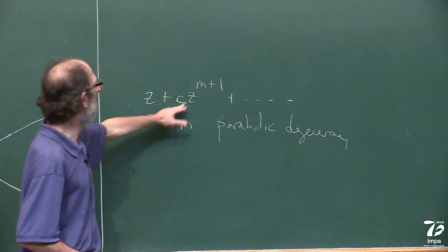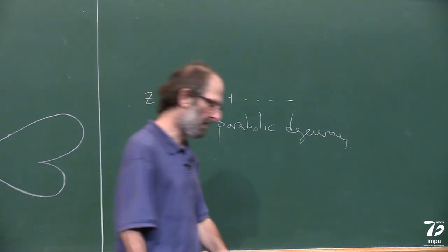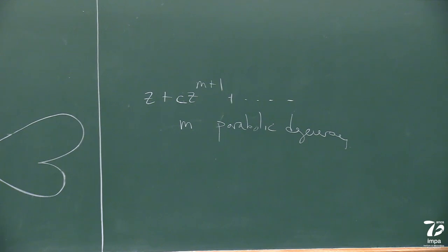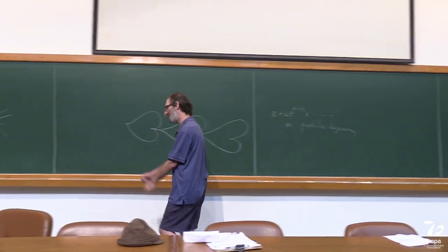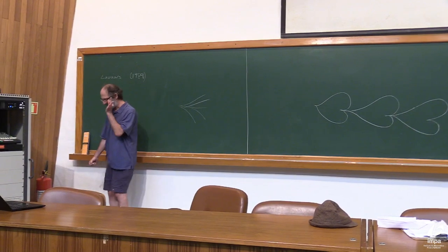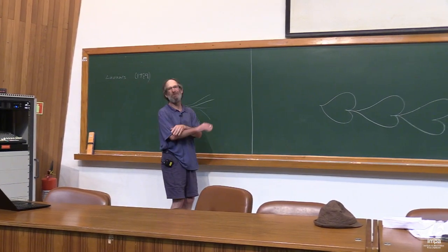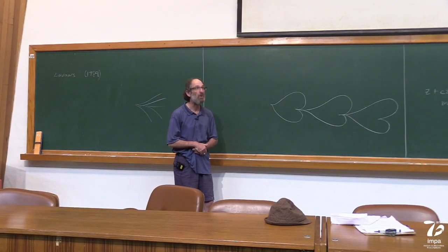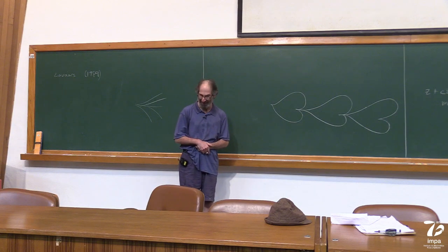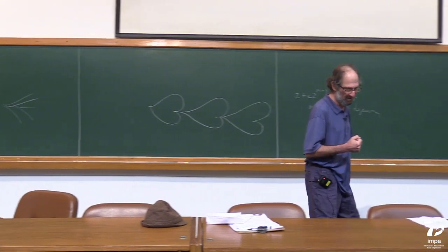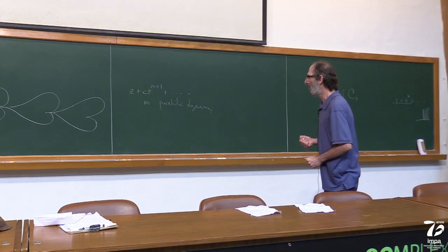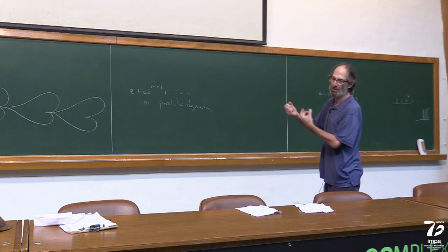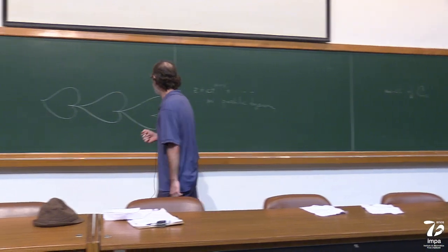This M here, I'll call this the parabolic multiplicity or parabolic degeneracy. M equals one is the so-called simple parabolic case. But you might actually have lots and lots of vanishing terms before you get that. If M is very large, this is somehow very close to the identity.